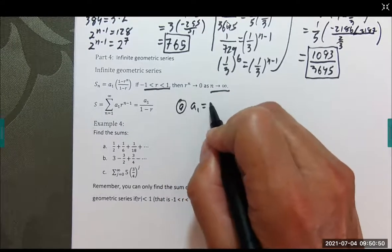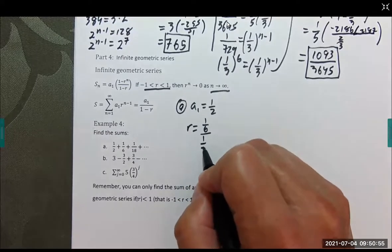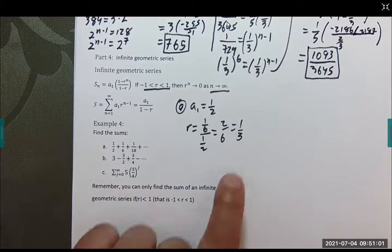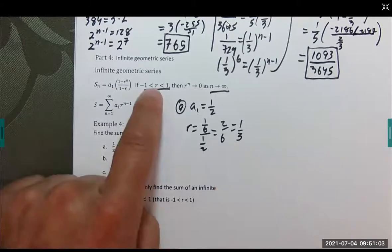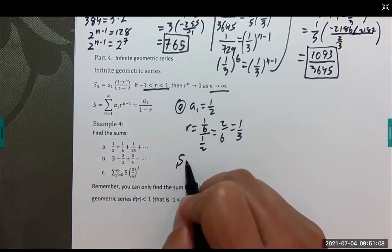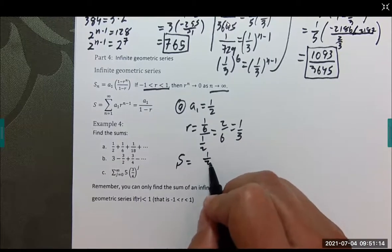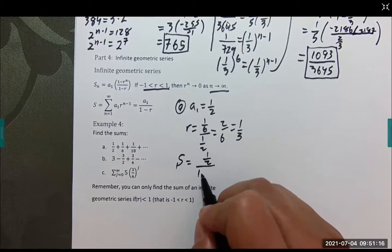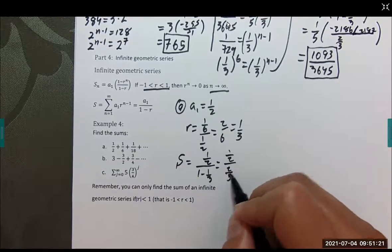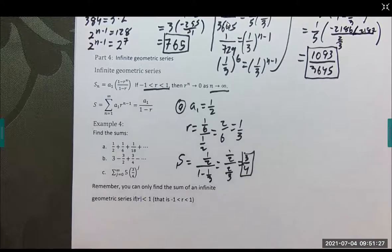Let's do part a. A sub 1 is 1/2. R is 1/6 over 1/2, which becomes 2 over 6, which is 1/3. R is less than 1, so we're good. We can do this. Our sum overall is a sub 1, which is 1/2, divided by 1 minus 1/3. 1/2 over 2/3, which gives us 3/4. Not too crazy.